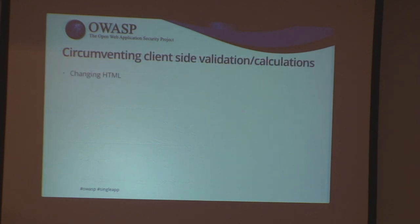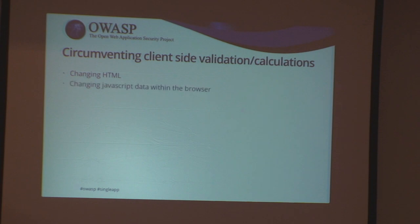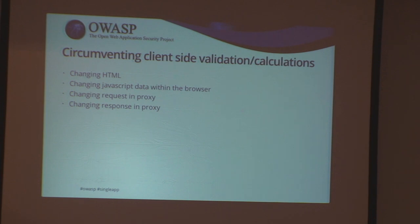Client-side validation is something we all know is not really a security measure — it's more of a usability thing to provide feedback. There are so many ways to circumvent it: we can change the HTML, change the JavaScript running in the browser, use a proxy, change requests or responses in the proxy, or directly attack the JSON service. Now we can simply disconnect from the web app and go directly to the services.